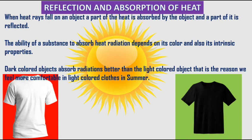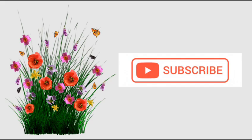When heat rays fall on an object, part of the heat is absorbed and part is reflected. The ability of a substance to absorb heat radiation depends on its color and intrinsic property. Dark-colored objects absorb radiation better than light-colored objects — which is why we feel more comfortable in light-colored clothes in summer. Thank you for watching this video. If you found it useful, please don't forget to subscribe.